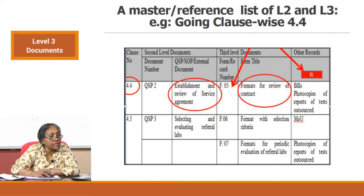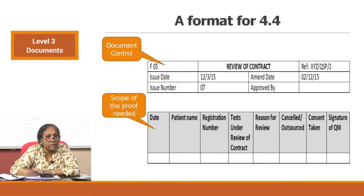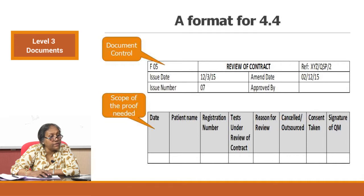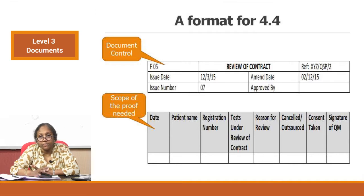The laboratory must make a format for this because these situations happen very commonly — you cannot perform a test after billing it. You keep a record for this particular review. You can also hold other records such as bills and photocopies of reports of outsourced tests — documentary evidence that you outsourced rather than simply not performing the test. Despite the problem you still processed the sample, just from another laboratory, and you produce the bills and photocopies for these outsourced tests. This is a requirement of NABL and is generally audited during assessments.